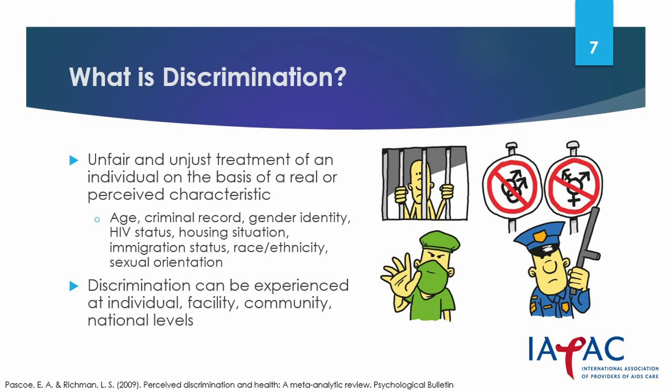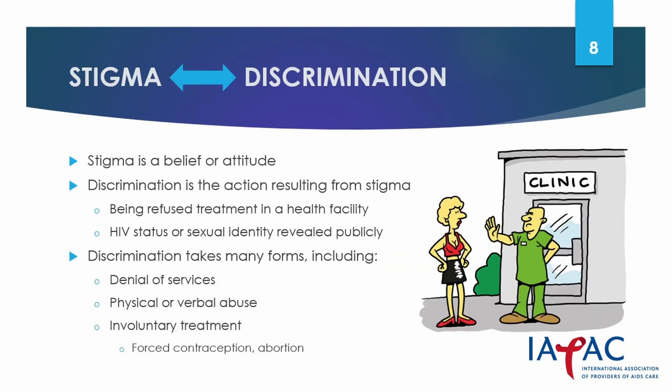Chronic stress can lead to a wide variety of physical and mental health problems, and discrimination has been linked to issues including anxiety, depression, obesity, and substance use. While stigma is a belief or attitude, the action resulting from stigma is discrimination. For example, men who have sex with men may be denied access to all available HIV prevention options, including pre-exposure prophylaxis or PrEP, because of judgments made by healthcare workers based on their personal values and beliefs.